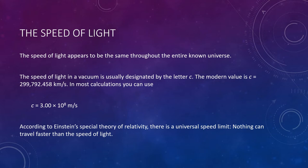The speed of light appears to be the same throughout the entire known universe. The speed of light in a vacuum, which is a space devoid of matter, is usually designated by the letter c. The modern value is c = 299,792.458 kilometers per second. In most calculations, you can use c = 3 × 10^8 meters per second. According to Einstein's special theory of relativity, there is a universal speed limit. Nothing can travel faster than the speed of light.